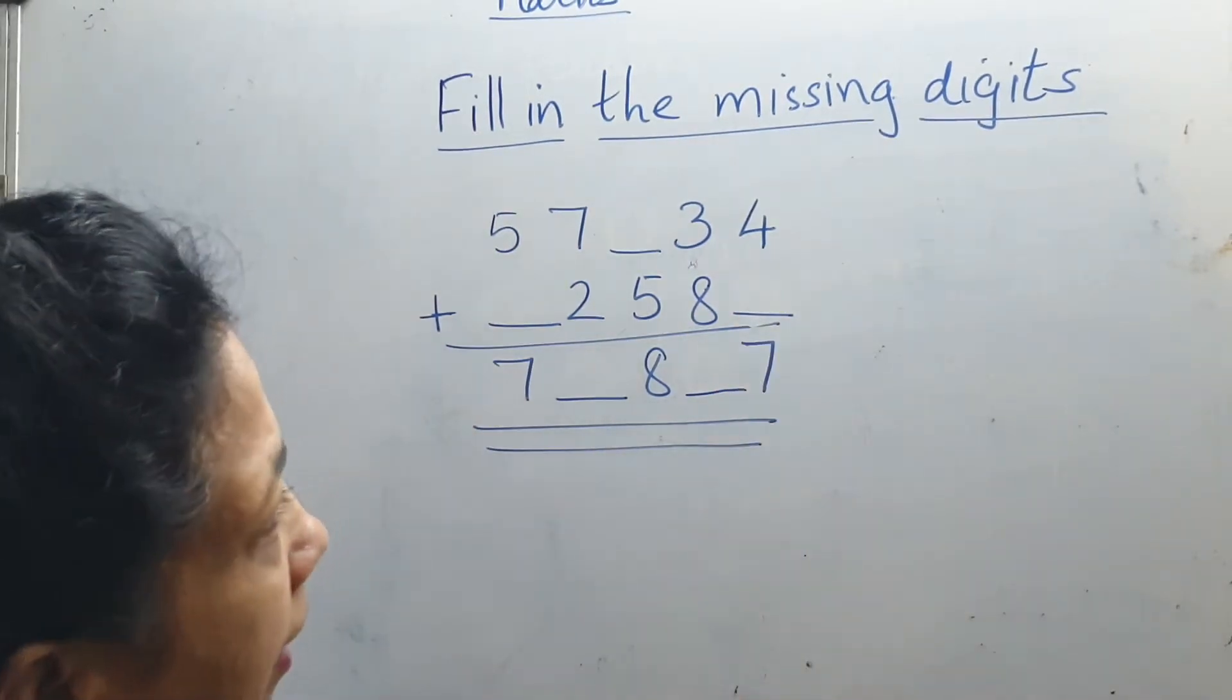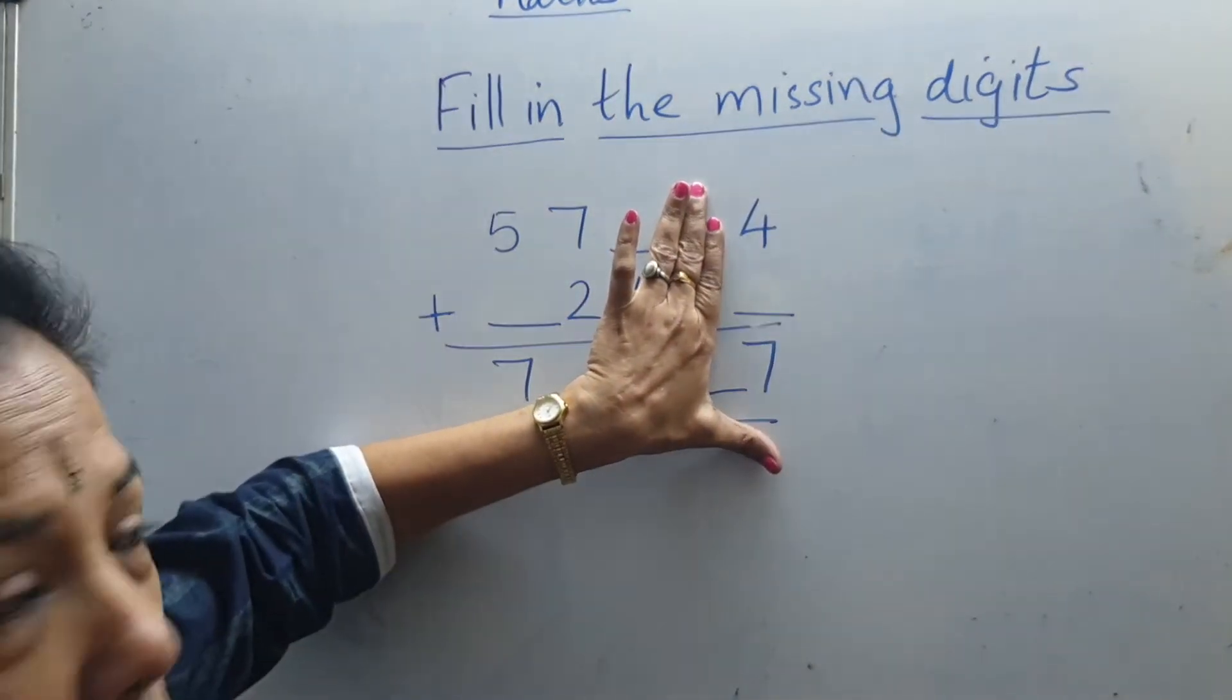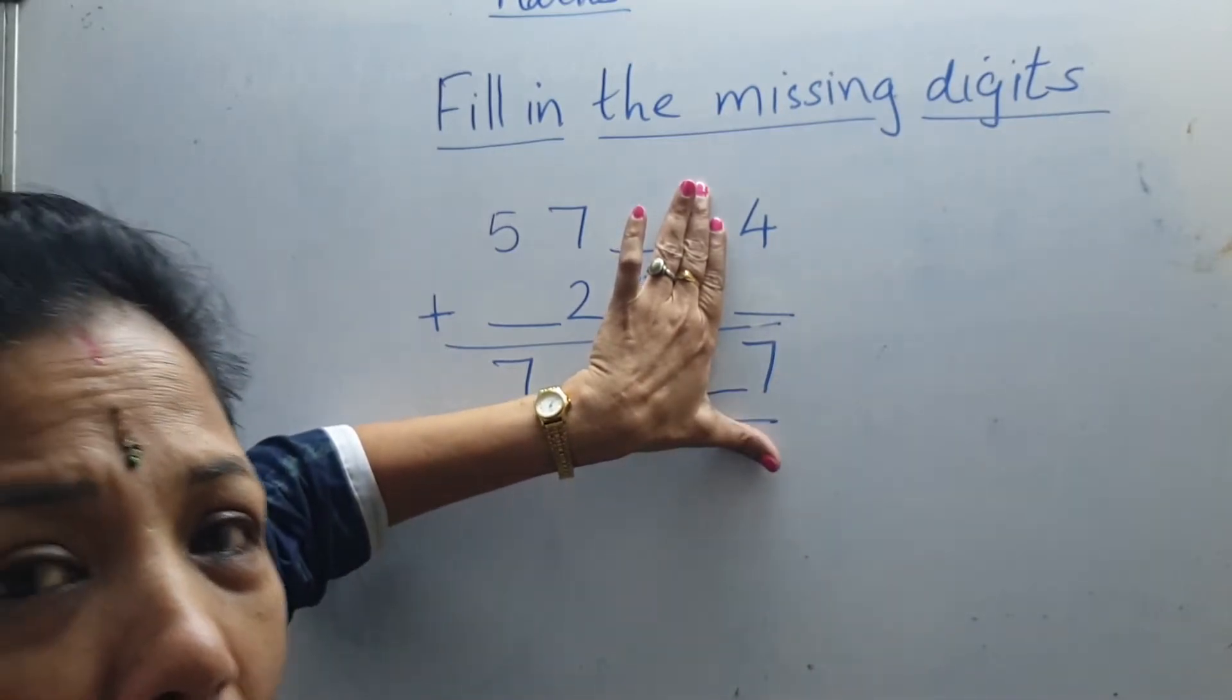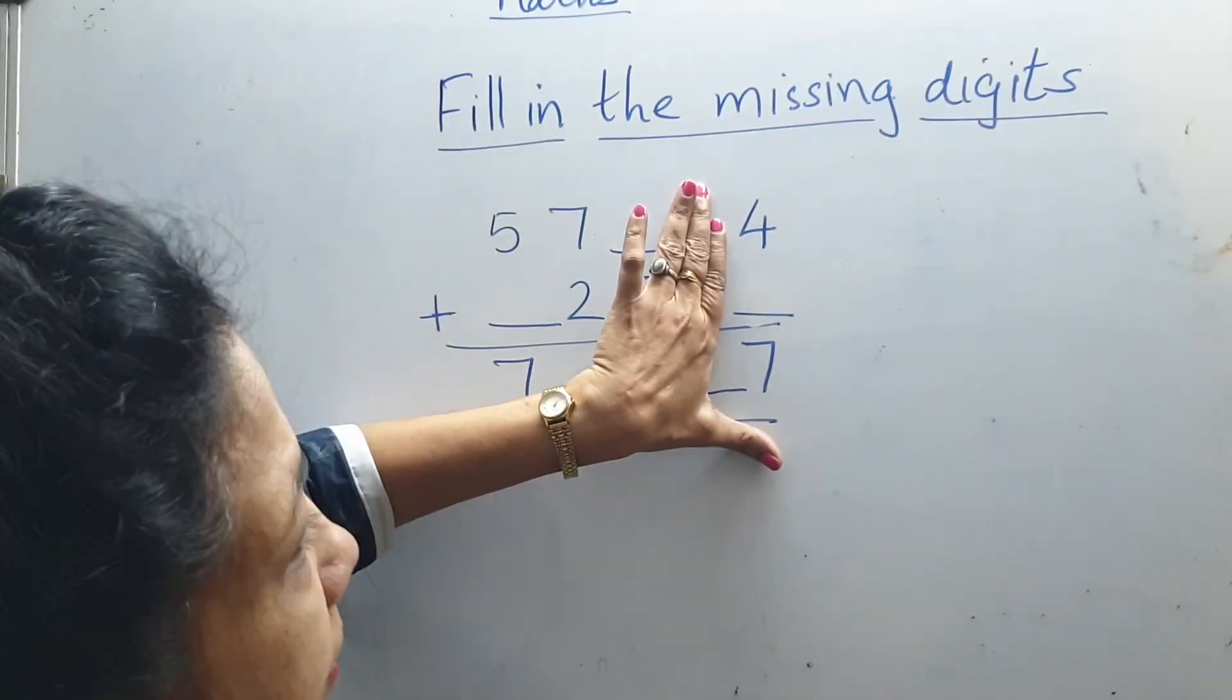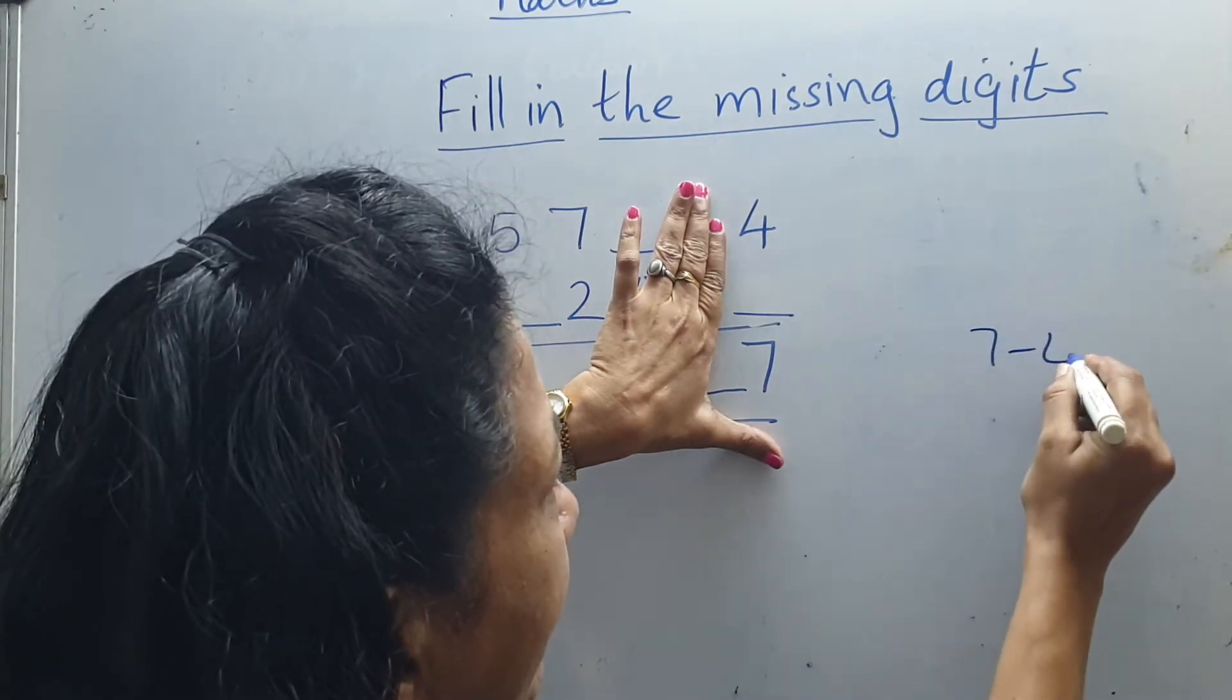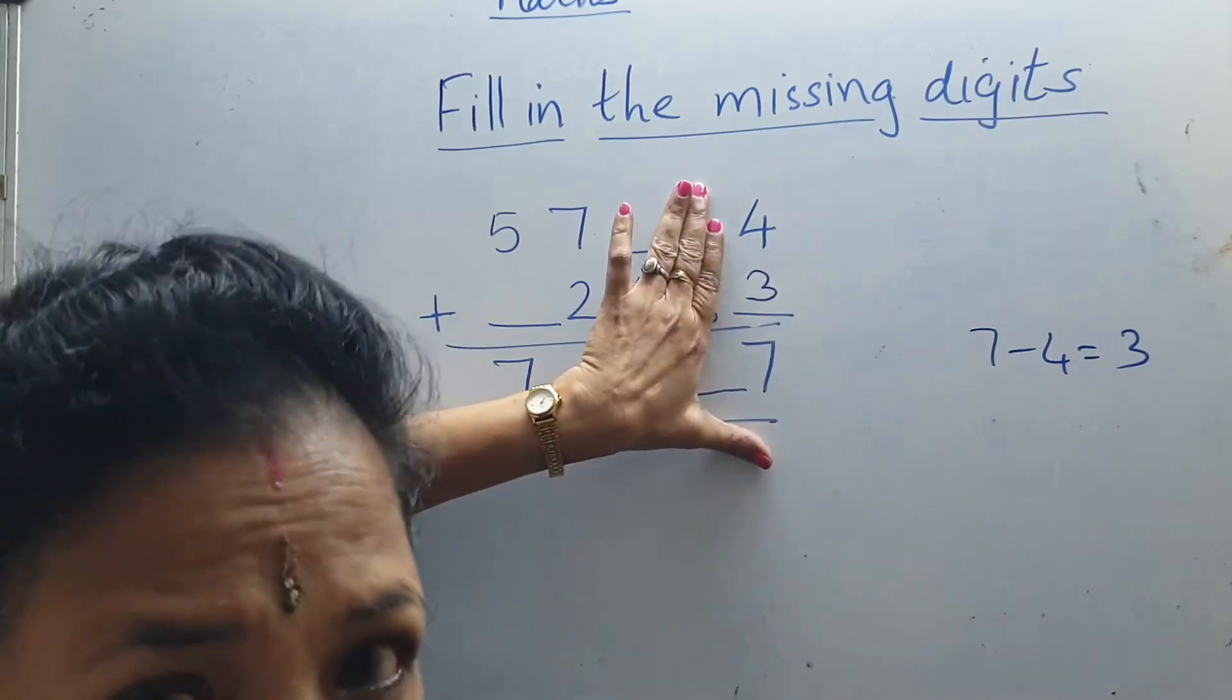See here, here given 4_7. So 4_7. Which number we have to add with 4 for getting 7? For getting 7, what we have to find out? 7 minus 4. What is 7 minus 4? 3. So that number here will be 3.